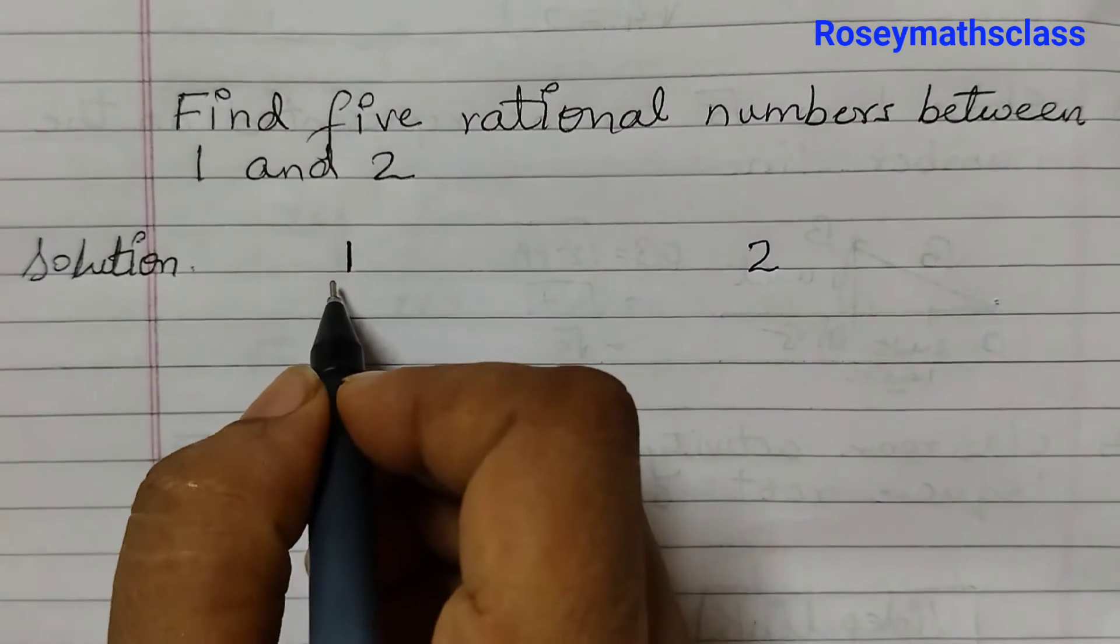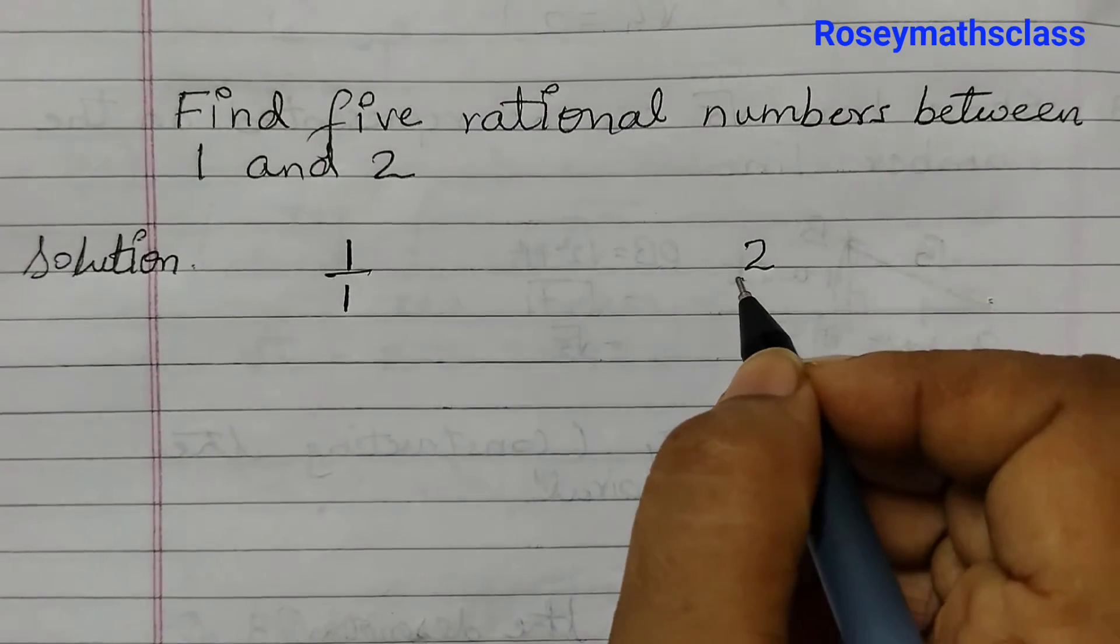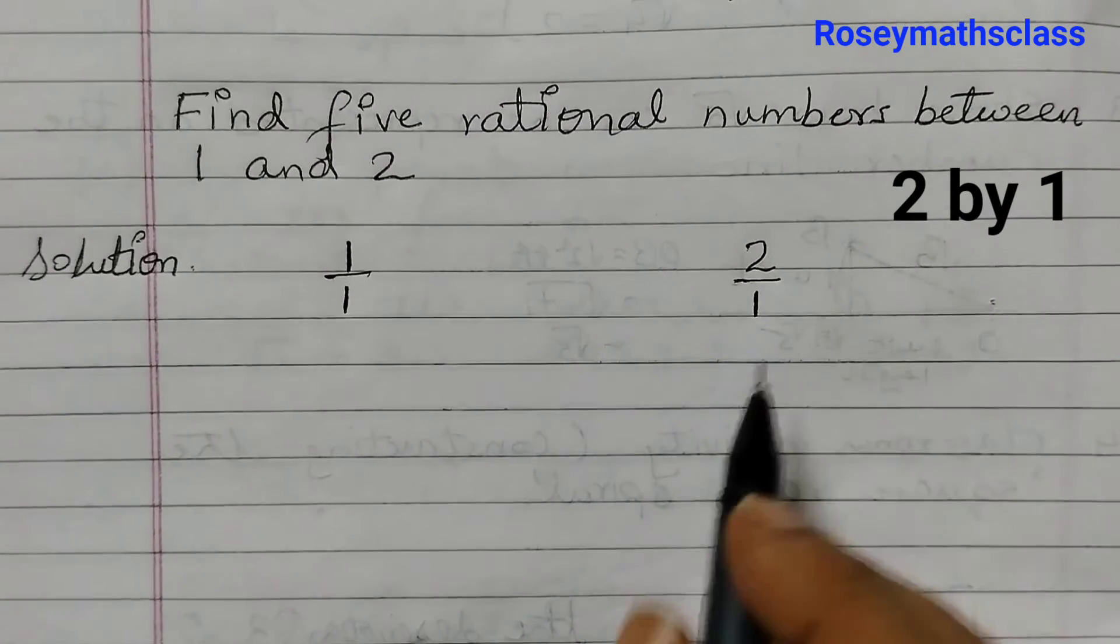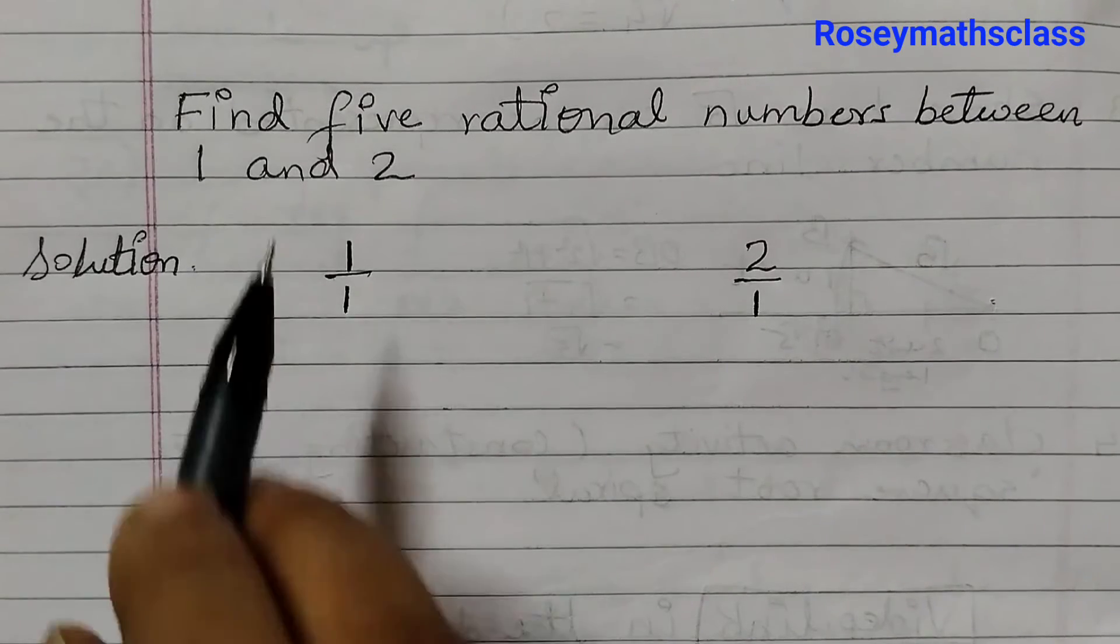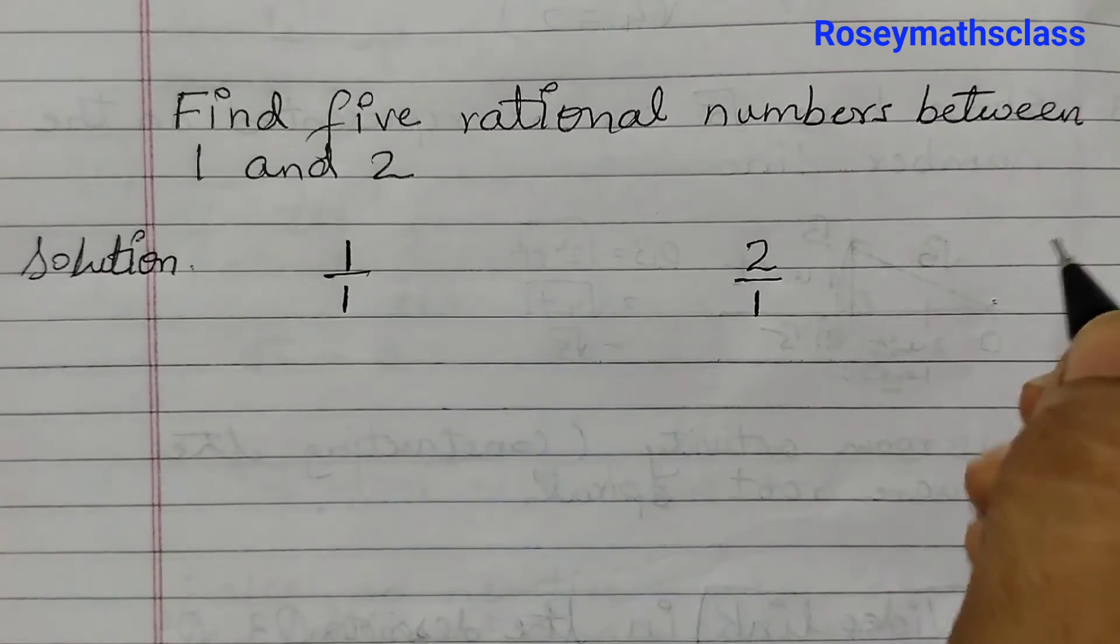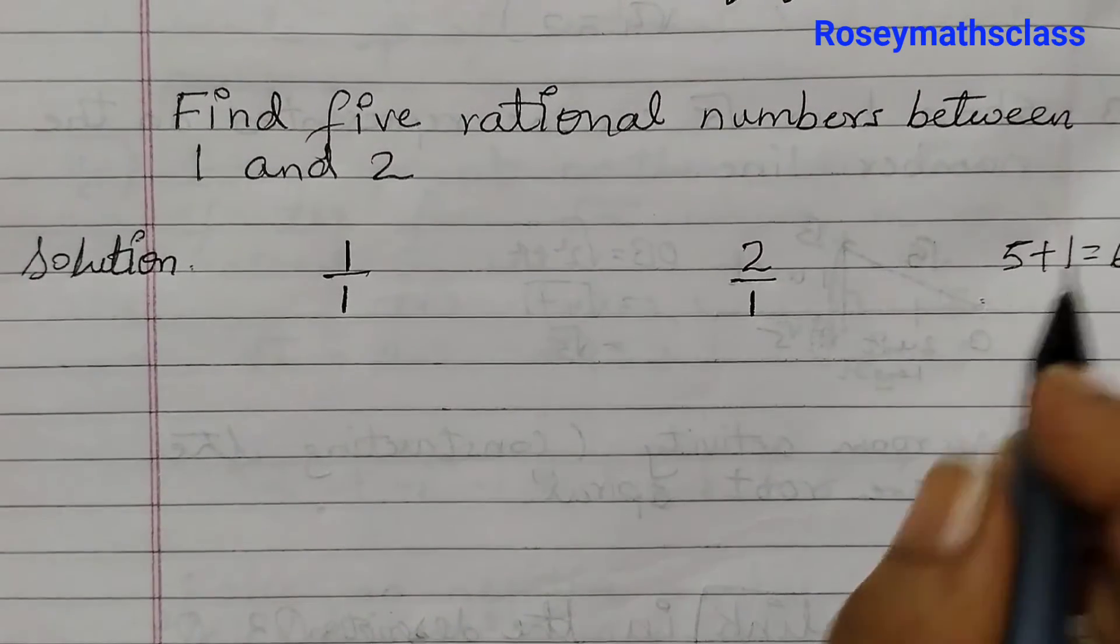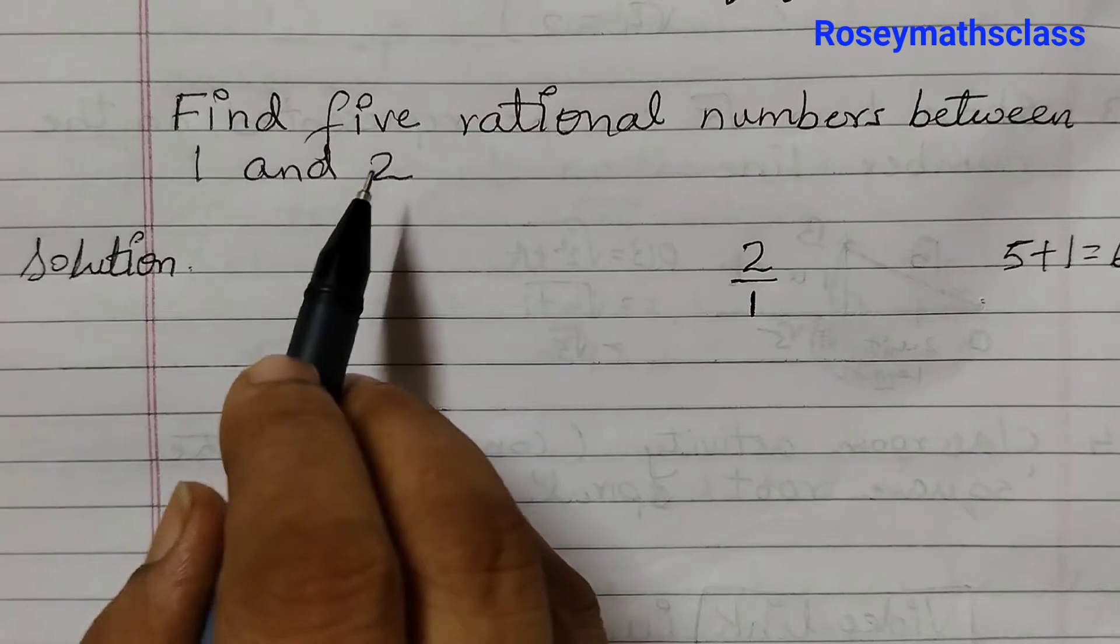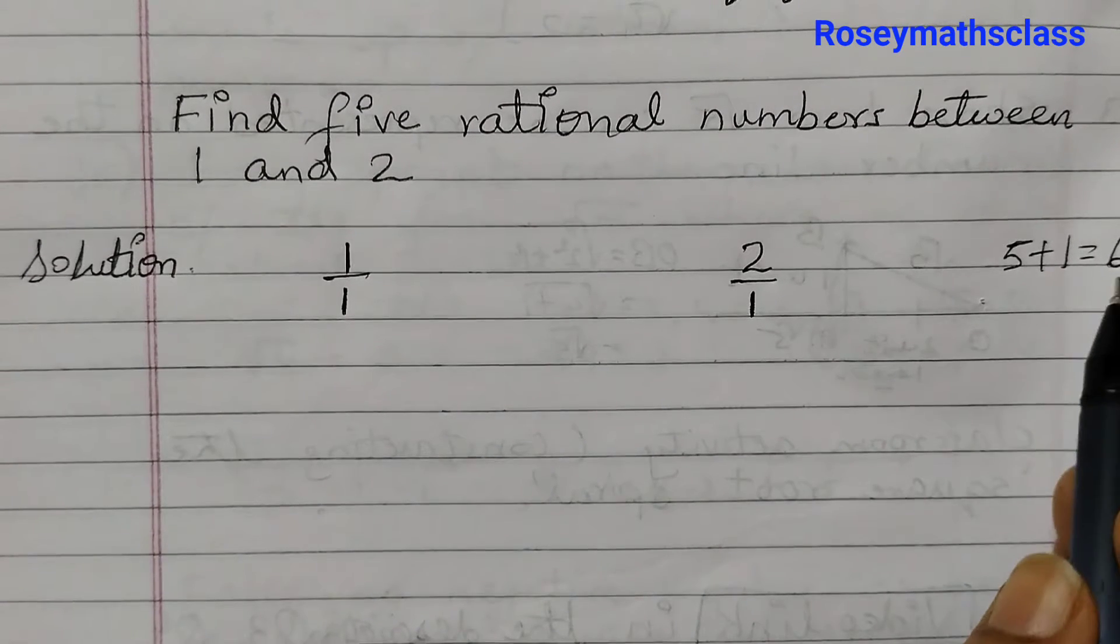First step, we can write 1 as 1/1 and 2 as 2/1. Now we need 5 numbers, so 5 plus 1 equals 6 - just add 1 to that. If you need to find 7, then 7 plus 1 is 8. Like that, so 6.